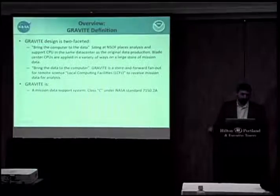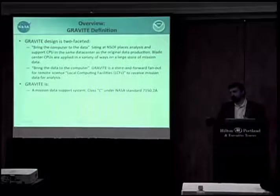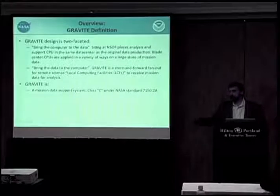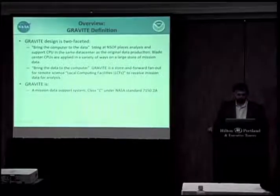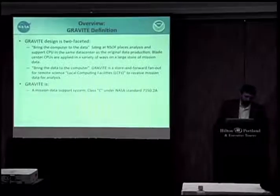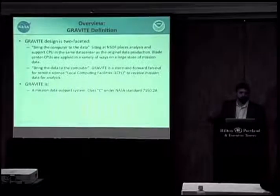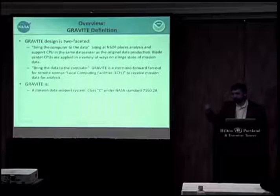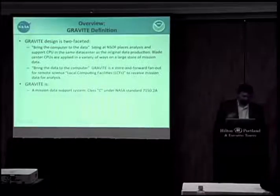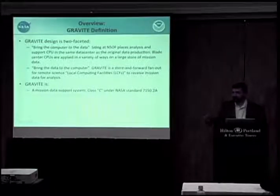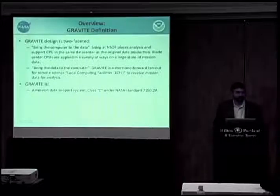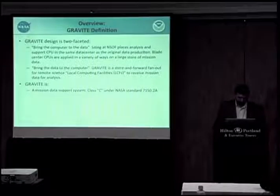And the other is bring the data to the computer. So we also have a distribution function where we send the data to other systems within NASA or NOAA that do other analysis. We're also what's called a Class C system under the NASA standards, which means that we support mission-critical activities, but we're not Class A or B. Class A is a space shuttle, human spacecraft or human life dependent. We're not that. We're Class C.